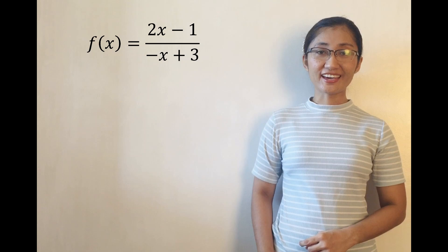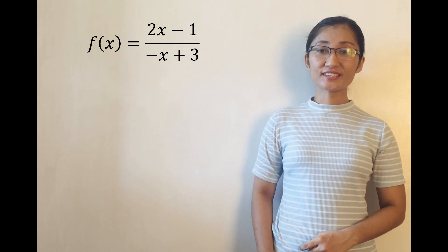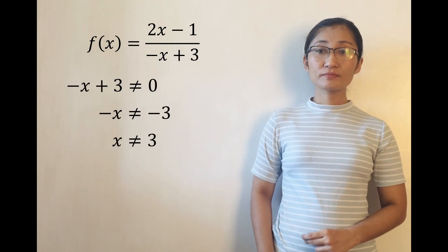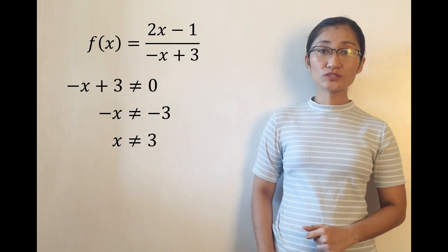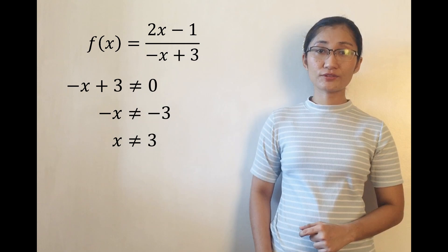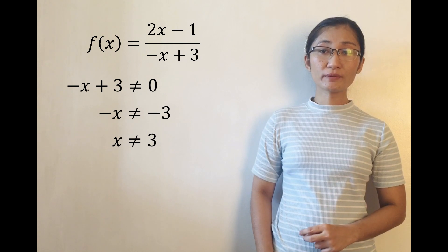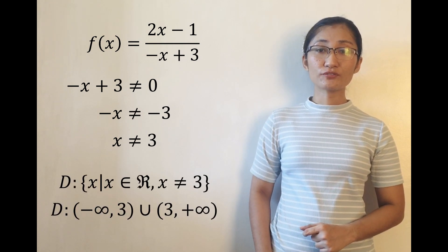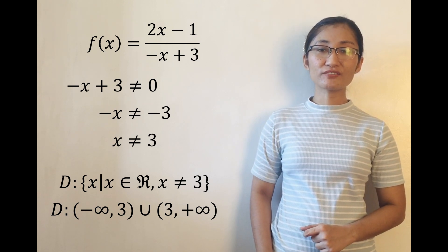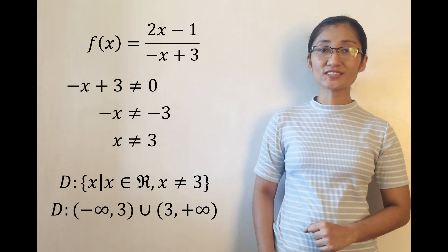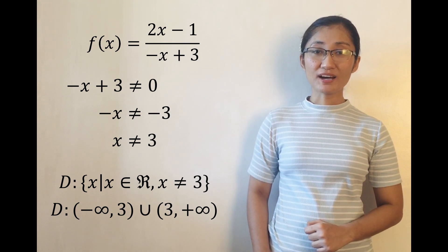Let us consider another example. Determine the domain and range of f(x) = (2x−1)/(−x+3). The domain: denominator cannot be 0, that is, negative x plus 3 is not equal to 0, so negative x is not equal to negative 3, giving x is not equal to positive 3. Therefore, the domain is x such that x is an element of real numbers but x is not equal to positive 3, or the union of intervals from negative infinity to positive 3 exclusive, and from positive 3 exclusive to positive infinity, not including positive 3.